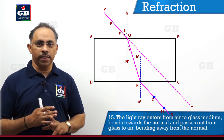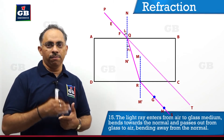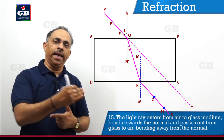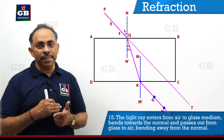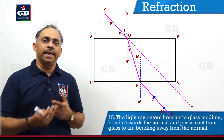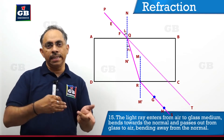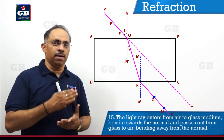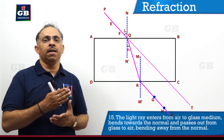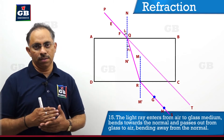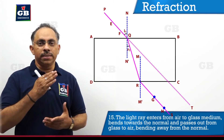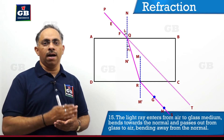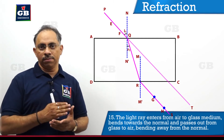There are two interfaces here. One is AB, where the light ray enters the glass from air. The other is CD, where the light ray comes out of the glass and enters air. At point R, I drop a normal perpendicular to surface CD, marked as MM'.